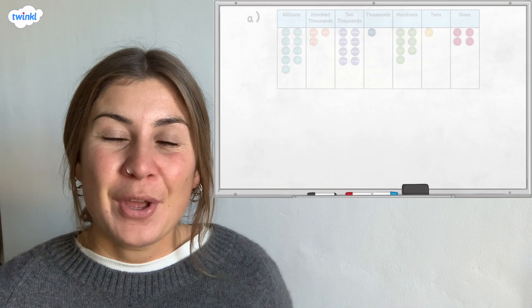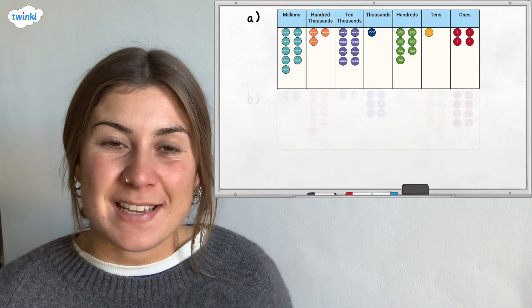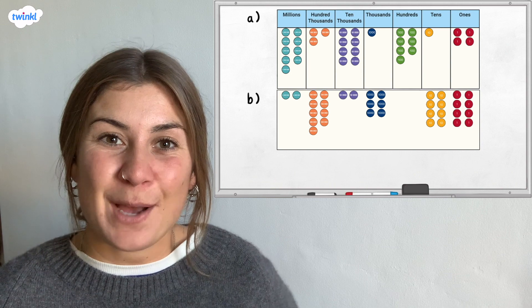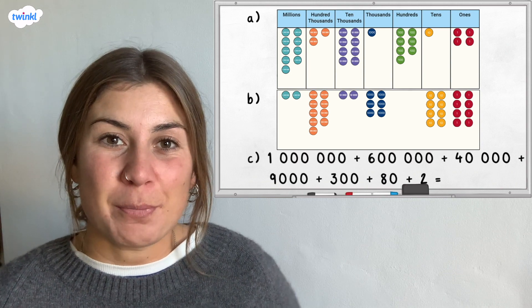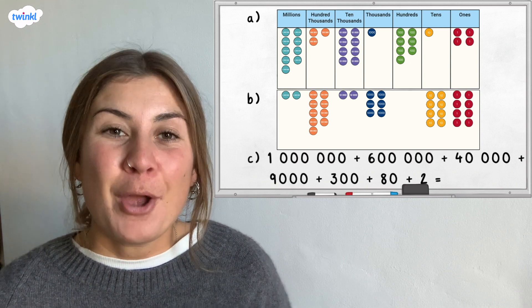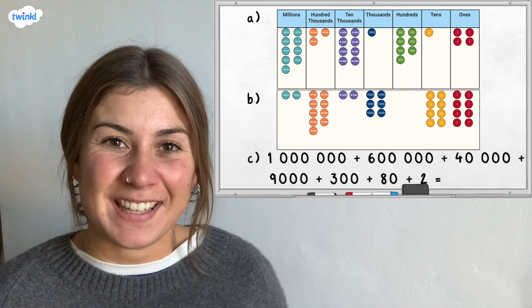Now it's your turn. Write down the number represented by each of these and then say it out loud. You could even use your place value grid to help you. Pause here until you're ready to see the answers.